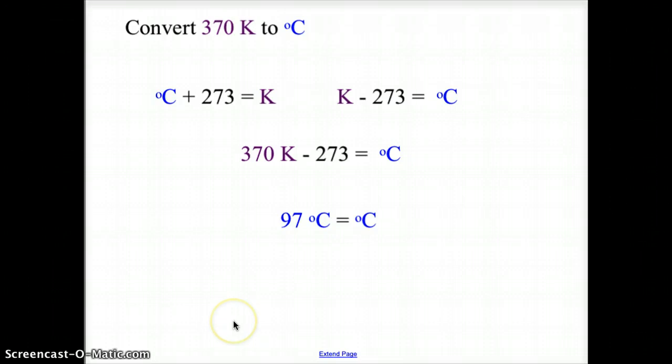To convert Kelvin to Celsius, if I have 370 Kelvin and I need to make it Celsius, I simply plug that in, 370 Kelvin minus 273, and that will give us a value of 97 degrees Celsius. Add 273 to go from Celsius to Kelvin, and subtract 273 to go from Kelvin to Celsius.